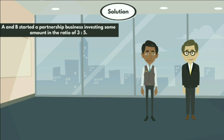In the statement, they given that A and B started a partnership business investing some amount in the ratio of 3 to 5. So here this is A and B. Let the initial investments of A and B be 3x and 5x respectively.